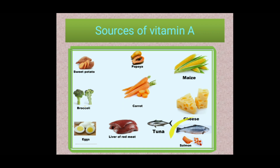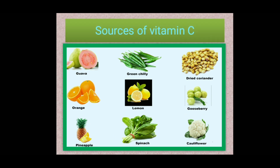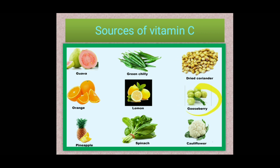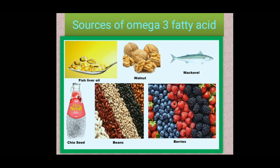Sources of vitamin C include fruits like guava, orange, pineapple, lemon, green chilies, dried coriander, gooseberry, cauliflower, and spinach. Sources of omega-3 fatty acids include fish liver oil (cod liver oil), walnut, and mackerel.